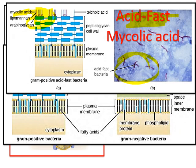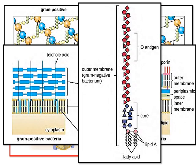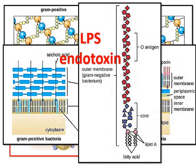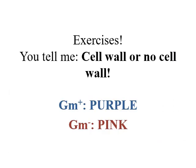Mycobacterium tuberculosis causes tuberculosis — a droplet-transmitted respiratory disease spread by coughing. Mycobacterium leprae is spread by contact transmission and causes leprosy. In gram negative bacteria, we have lipopolysaccharide endotoxin — there's the O antigen stuck to the outside, with the core and lipid A anchoring the endotoxin in the plasma membrane.